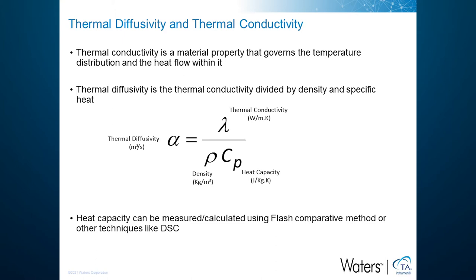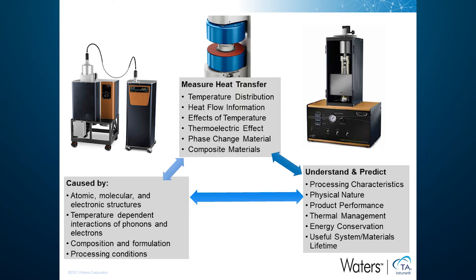In heat transfer analysis, thermal diffusivity is thermal conductivity divided by density and specific heat. It was originally introduced in the differential heat conduction equation under transient status, in which temperature is not constant at a given position. Thermal diffusivity is a measure of thermal inertia. With a material with high thermal diffusivity, heat moves rapidly through it, because the material conducts heat quickly relative to its heat capacity or thermal mass. Thermal diffusivity is often measured with the flash method, from which thermal conductivity can be derived along with specific heat and density.